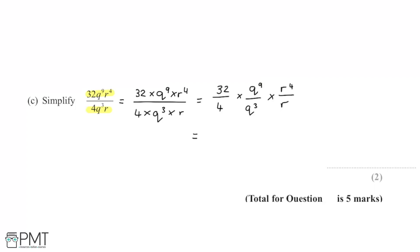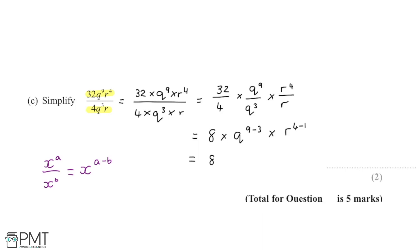Now I can simplify each fraction and multiply them back together. Starting with 32 over 4, that gives 8. Then for q to the 9 over q to the 3, referring back to the laws of indices: x to the a over x to the b gives x to the a minus b, so we subtract the denominator power from the numerator power. That gives q to the power of 9 minus 3. By the same principle, r to the 4 over r gives r to the power of 4 minus 1. So we now have 8 multiplied by q to the power of 6 multiplied by r cubed.